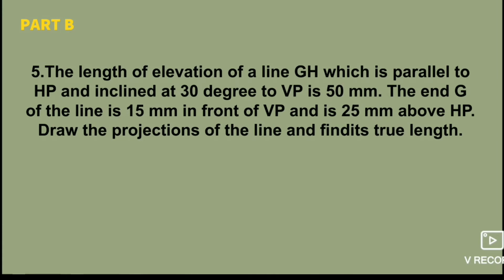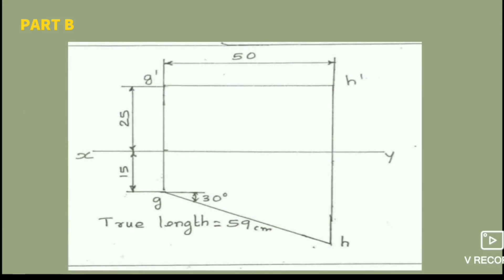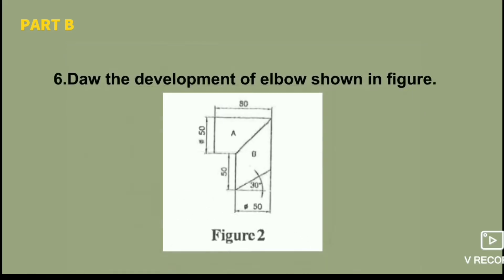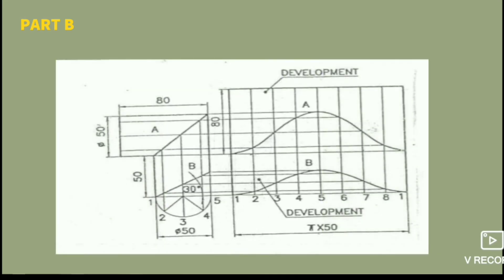Try the projection of a straight line. There is an inclination — the length of elevation of a line GH which is parallel to HP and inclined at 30 degrees to VP. The end G of the line is 50mm in front of VP and 25mm above HP. Draw the projection of the line and find its true length. The true length is 59mm. The correct method is to mark and score the same length.